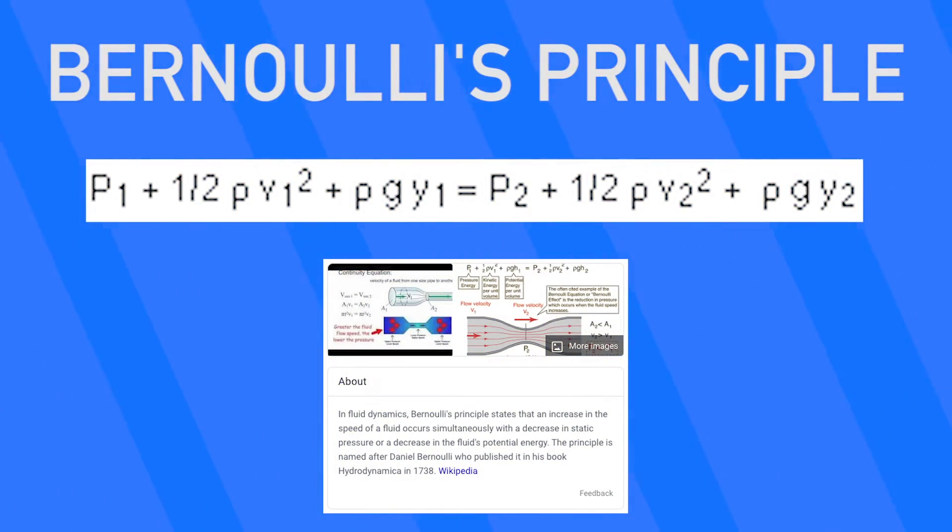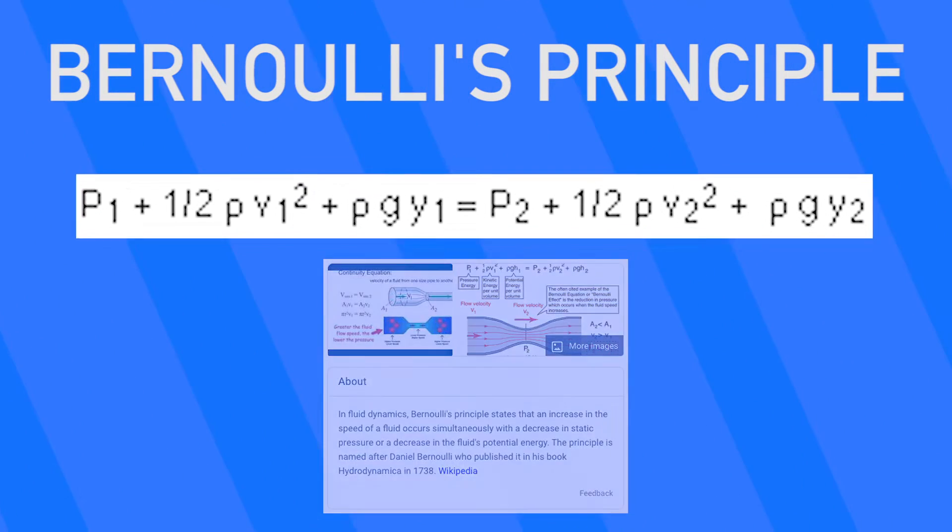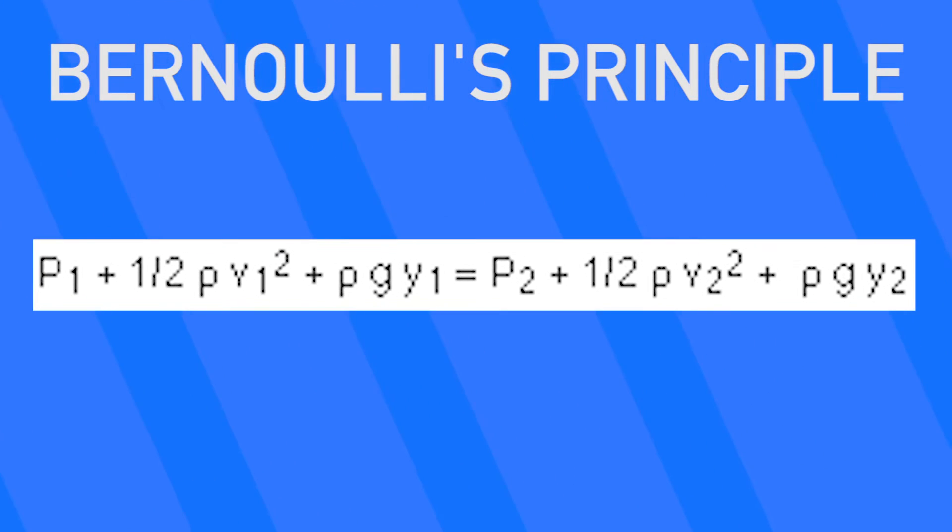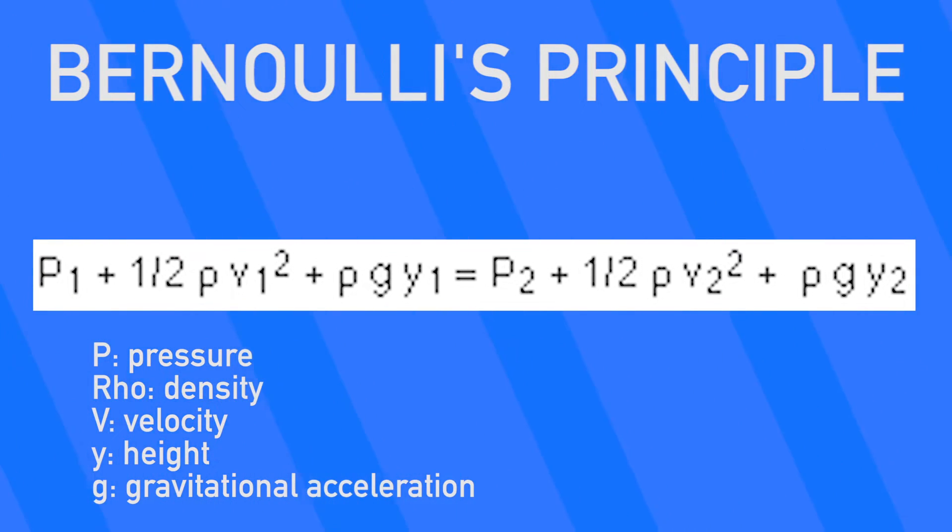It states that the pressure, speed, and height of a fluid at two different points in steady flow, non-viscous, incompressible fluids are related like this. P is pressure, rho is density, v is velocity, y, often represented as h, is height, and g is gravitational acceleration, which is a constant depending upon elevation or location. Generally, you can use about 9.81 meters per second squared for this.